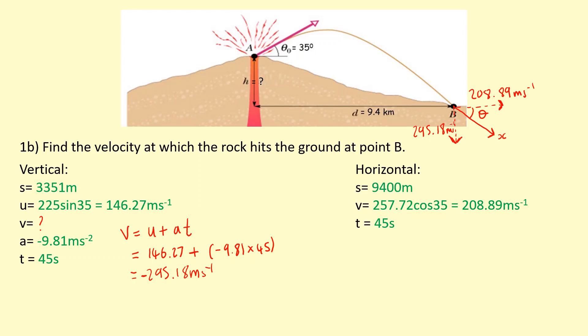Now to work out the total speed you can just use Pythagoras. You're basically working out the hypotenuse, so you do 295.18 squared plus 208.89 squared, and then square root that to work out the magnitude of the resultant, and you get 362 meters per second. We want the angle as well.